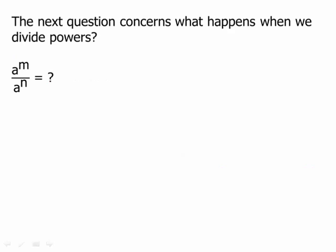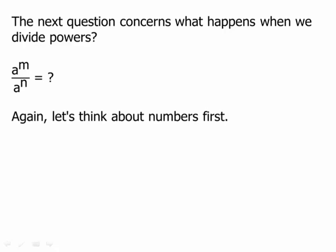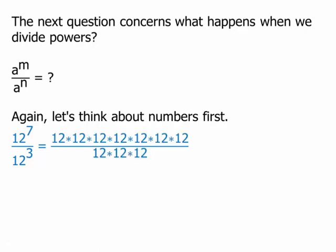The next question concerns what happens when we divide powers. Again, don't think in terms of just an abstract law — go back and think this through in terms of the fundamental definition of an exponent. Let's start with numbers. Let's say twelve to the seventh divided by twelve cubed. Twelve to the seventh has seven factors of twelve in the numerator, and in the denominator we're going to have three factors of twelve multiplied together.